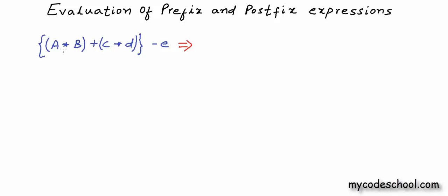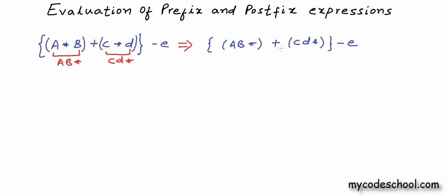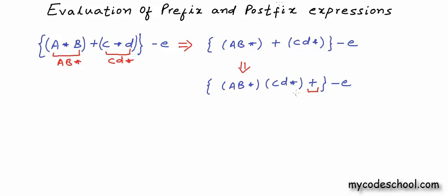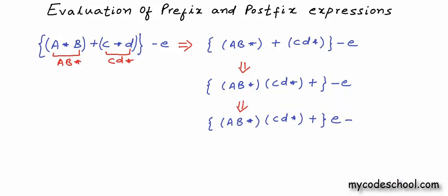Now we will go one operator at a time. Operands for this multiplication operator are A and B, so this A asterisk B will become AB asterisk. Next we need to look at this multiplication — this will transform to CD asterisk. Now we can do the change for this addition. The two operands are these two expressions in postfix, so I am placing the plus operator after these two expressions. Finally, for this last operator, the operands are this complex expression and this variable E, so this is how it will look after the transformation. When we are done with all the operators, we can get rid of all the parentheses — they are not needed in postfix expression.